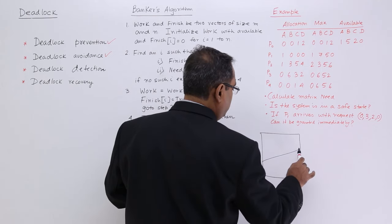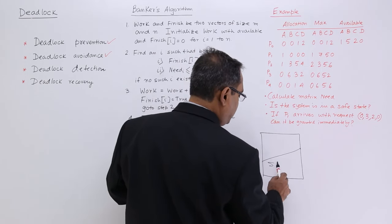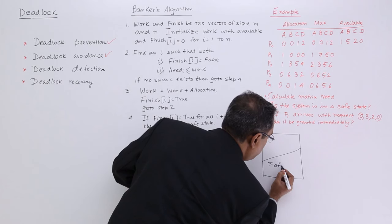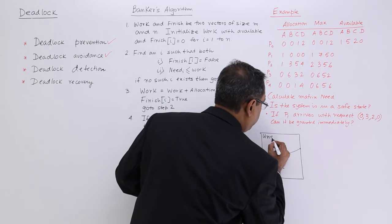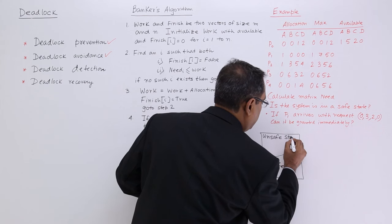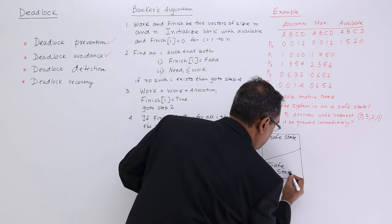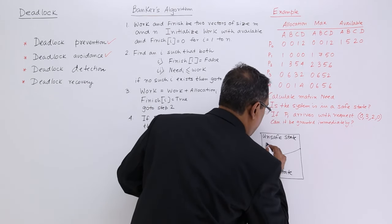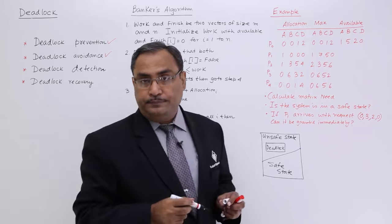The system is having two states: one is the safe state and another one is the unsafe state. And when in the unsafe state, the deadlock may or may not take place.